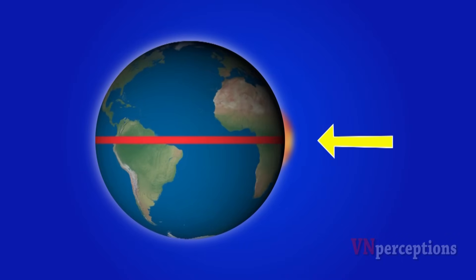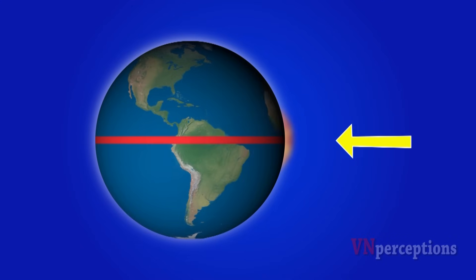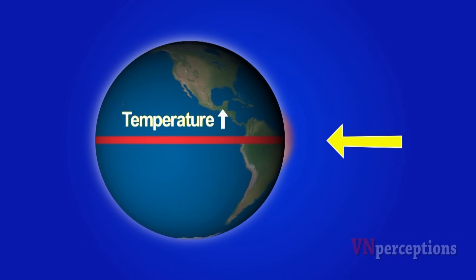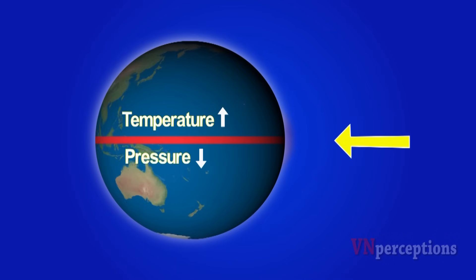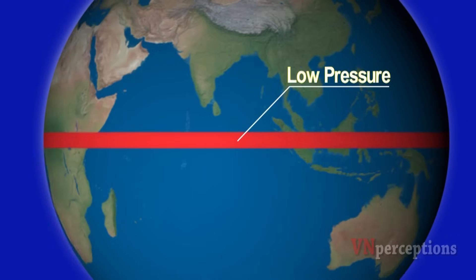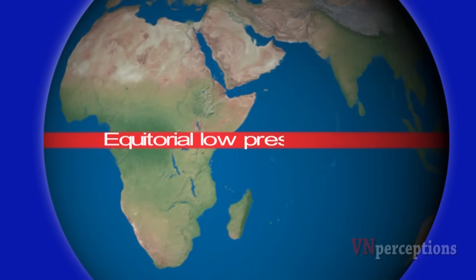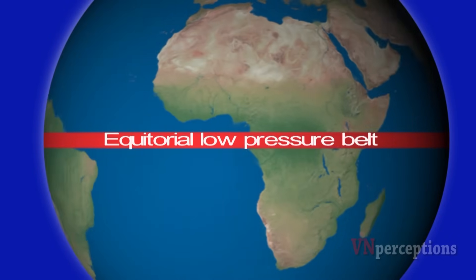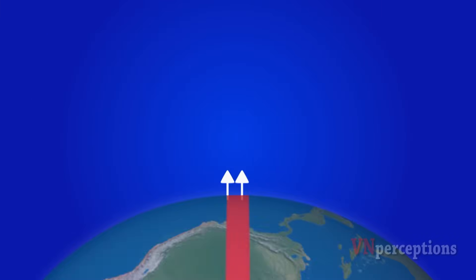When temperature increases, pressure decreases. So along the equator we have low pressure and we call this region as equatorial low pressure belt. The warm air starts rising up in the troposphere.